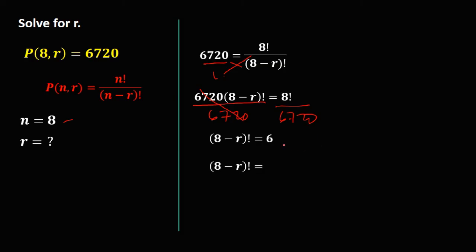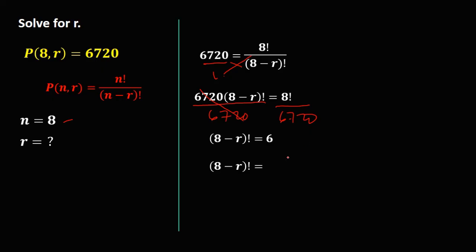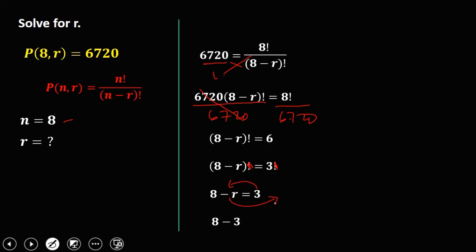Rewrite 6 in factorial form — trial and error: 2 factorial is 2, 3 factorial is 6. So 6 equals 3 factorial. Drop the factorial since both sides now have one. So 8 minus R equals 3. Transpose 3 — it becomes negative — and transpose R — it becomes positive. So R equals 8 minus 3, which is 5.